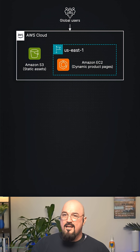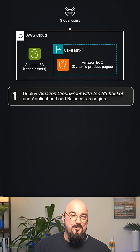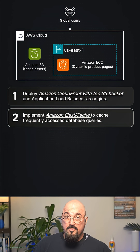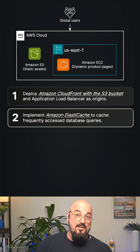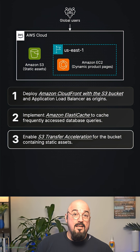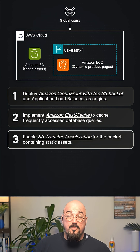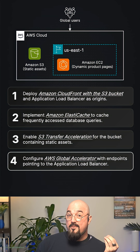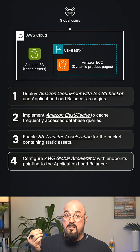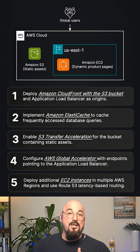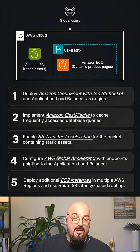Let's look at the options. Option one: deploy Amazon CloudFront with S3 buckets and an application load balancer as the origins. Option two: implement Amazon ElastiCache to cache frequently accessed database queries. Option three: enable S3 Transfer Acceleration for the bucket containing static assets. Option four: configure AWS Global Accelerator with endpoints pointing to the application load balancer. Option five: deploy additional EC2 instances in multiple AWS regions and use Route 53 latency-based routing.